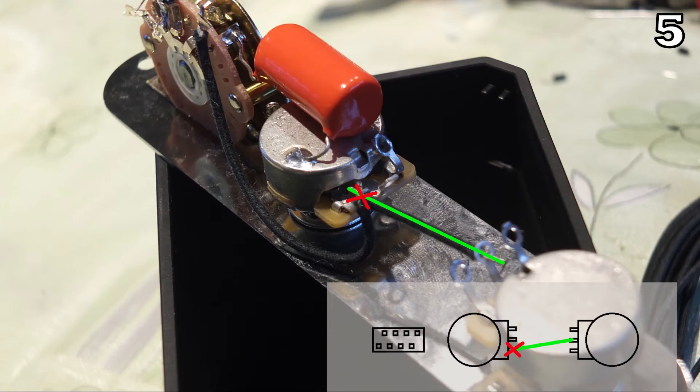That brings us to step number five. Place a wire between the middle pin of the blend pot and the bottom pin of the volume pot. Only solder the wire to the middle pin of the blend pot.